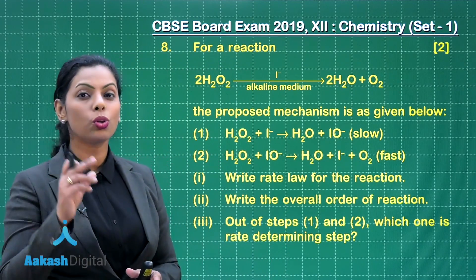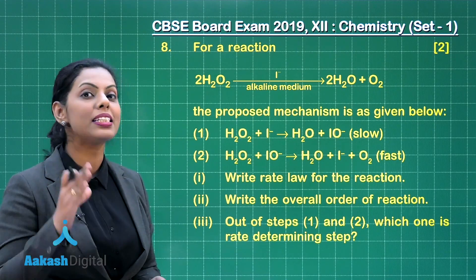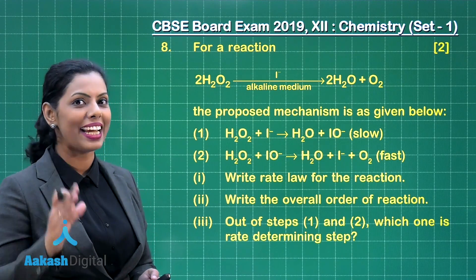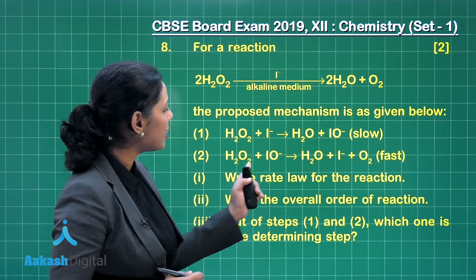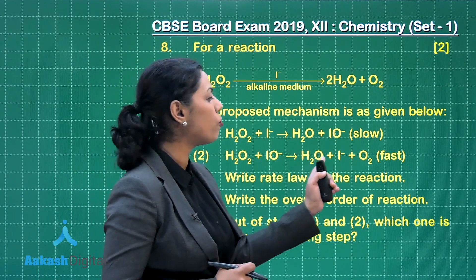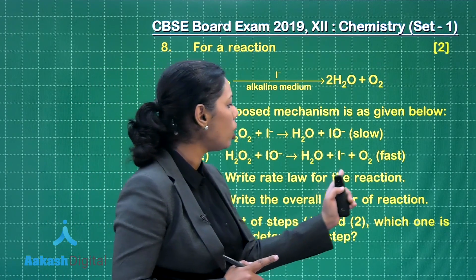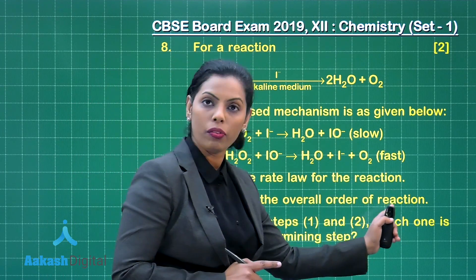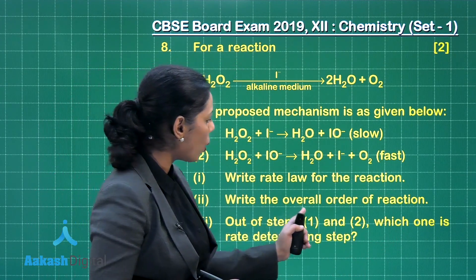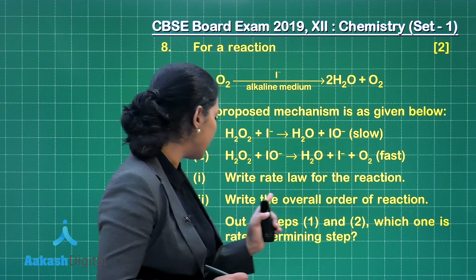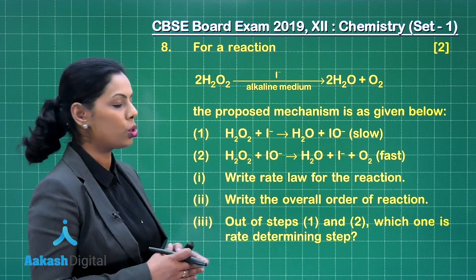This is the fast step. You should always know that the slow step or the slowest step is the rate-determining step. Now write the rate law for the reaction, write the overall order of the reaction, and out of steps 1 and 2, which one is the rate-determining step?